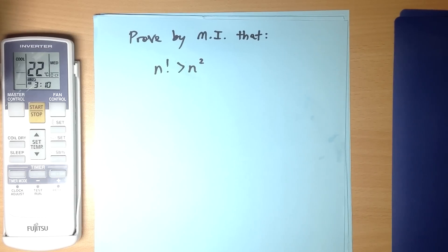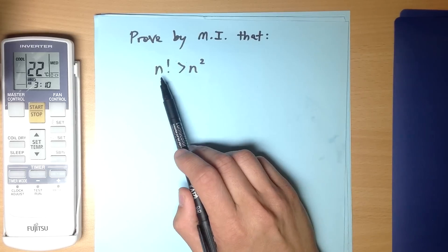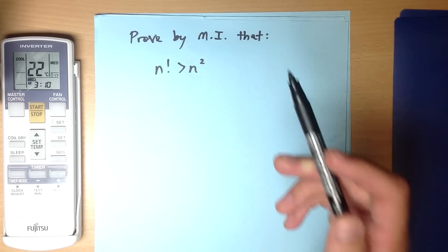Here's an inequality proof that I've been asked to show by mathematical induction. Prove by mathematical induction that n factorial is greater than n squared.